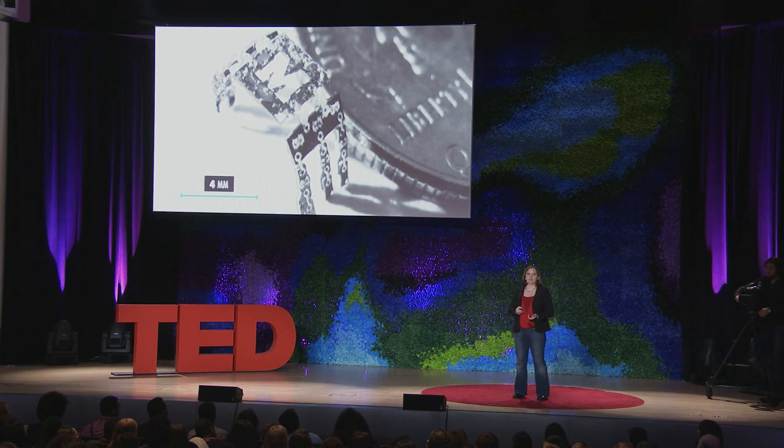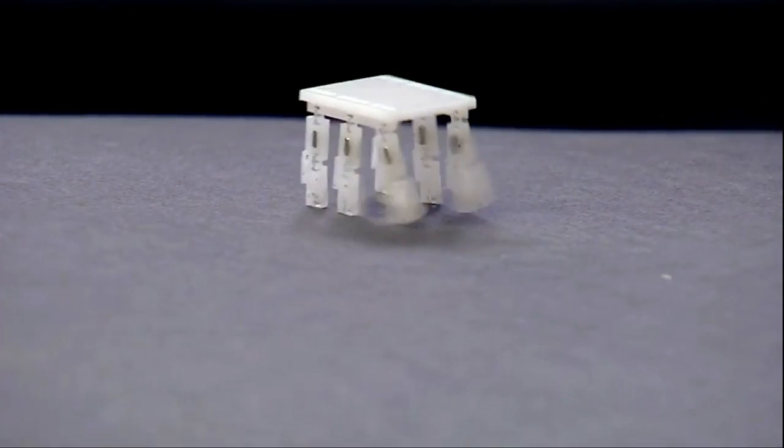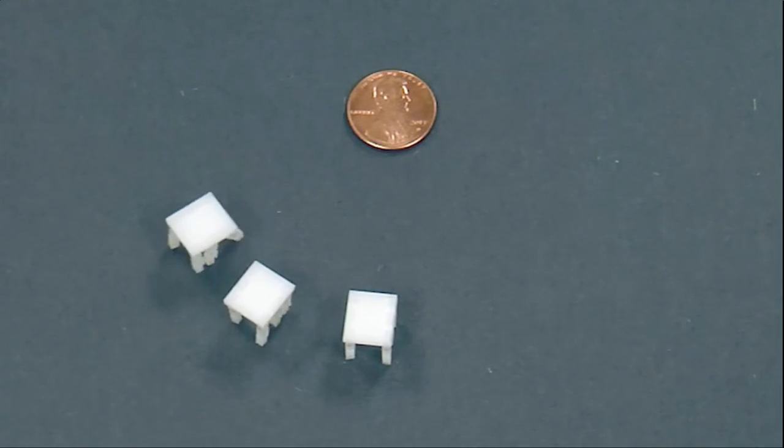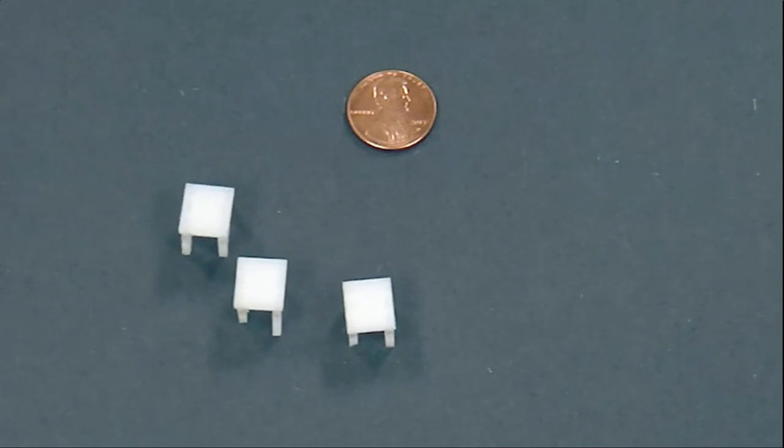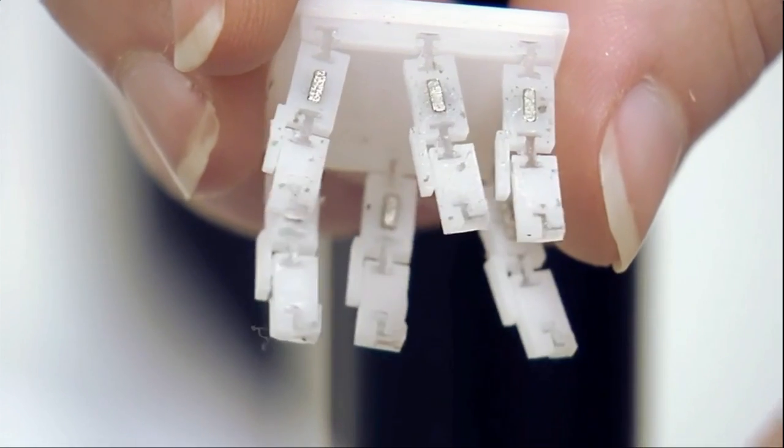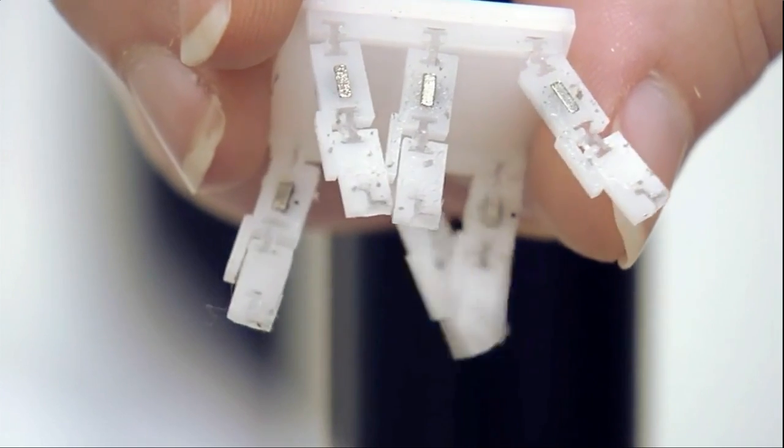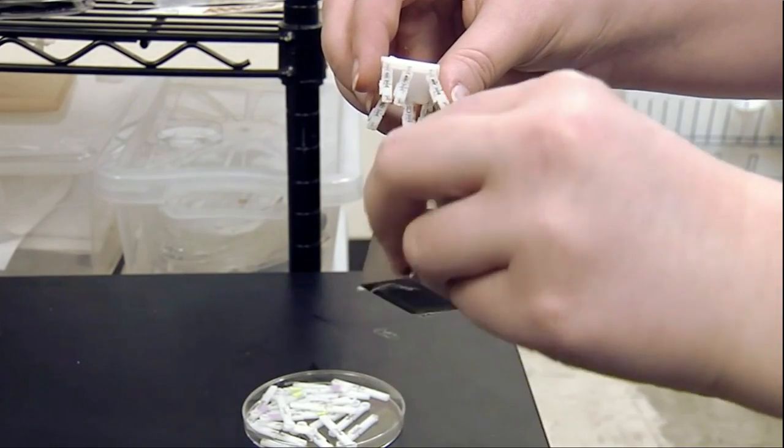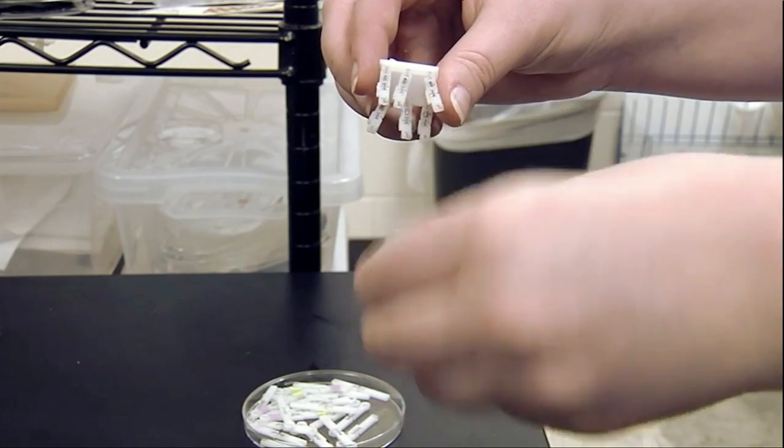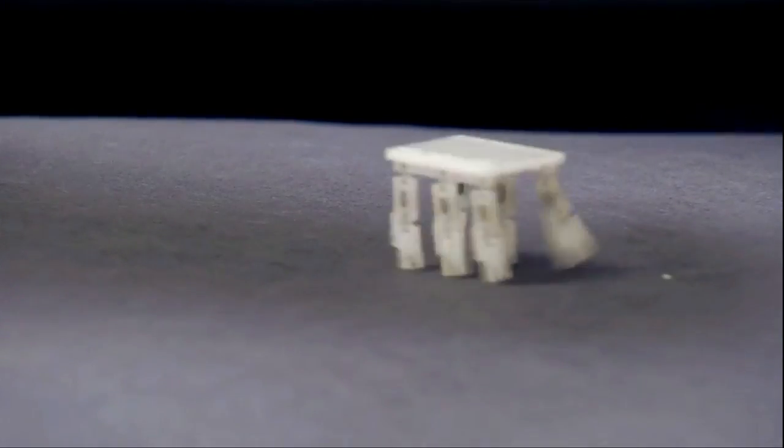This guy doesn't work quite yet, but we do have slightly larger versions that do run around. This is about a centimeter cubed, a centimeter on a side, so very tiny. And we've gotten this to run about 10 body lengths per second, so 10 centimeters per second, so pretty quick for a little small guy, and that's really only limited by our test setup. But this gives you some idea of how it works right now.